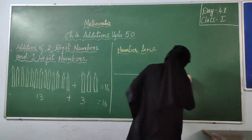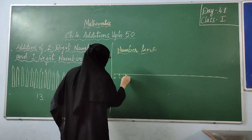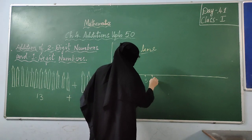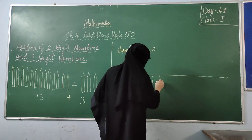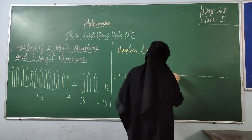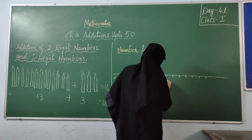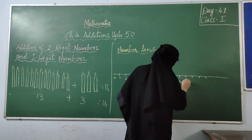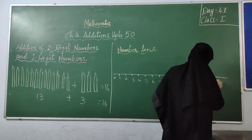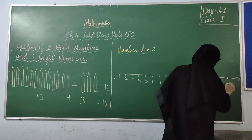So, I am going to draw a line with numbers at equal distance. I told you already — the distance between one number and the other number should be equal. Marking: 8, 9, 10, 11, 12, 13, 14, 15, 16, 17.